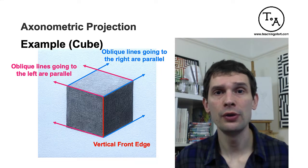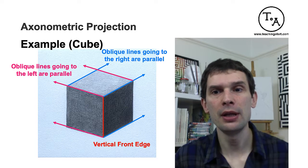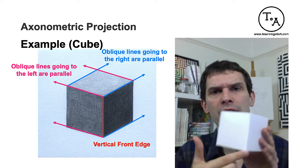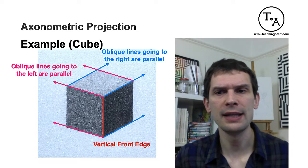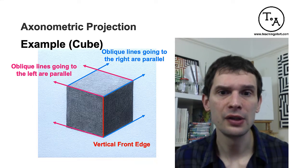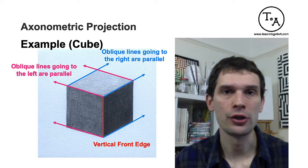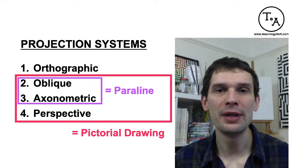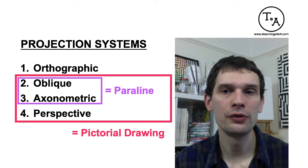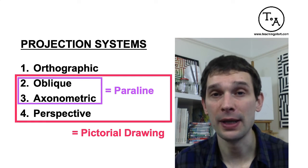If you place the front edge in the middle and draw lines at 30 degrees on both the left and right sides, you would create the isometric projection. We've now covered the first three projections. Let's quickly introduce the last one, which is the most important: perspective projection. The reason it is the most important is because if you draw perspective correctly, it reflects how the object really looks in real life — it is photorealistic.